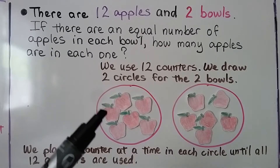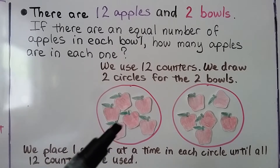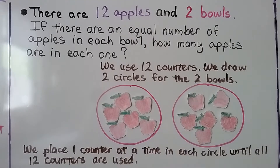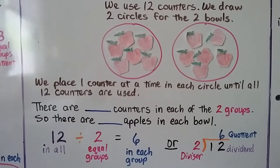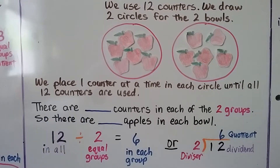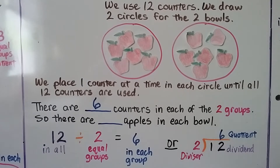We count 6 apples in this bowl, and 6 apples in that bowl. So there are 6 counters in each of the 2 groups, meaning there are 6 apples in each bowl.